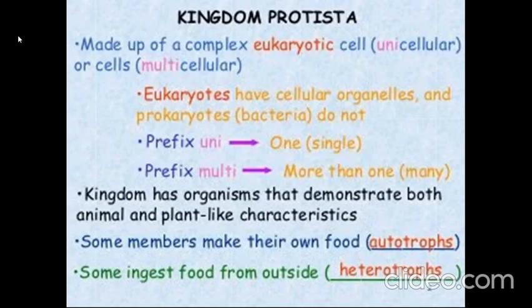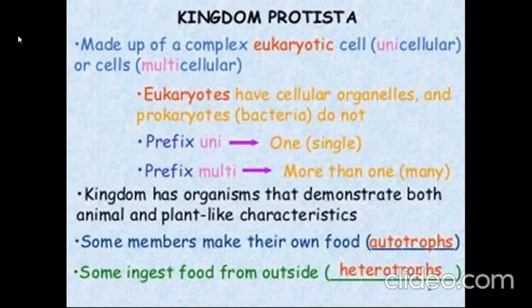Today we will learn about Kingdom Protista. They are complex eukaryotes with a nucleus and all cell organelles. They are mainly unicellular or rarely multicellular. These Kingdom organisms demonstrate both animal and plant-like characteristics. Some members have chlorophyll and can make their own food — they are autotrophs. Some cannot make food and they are heterotrophs.